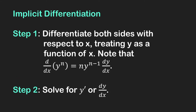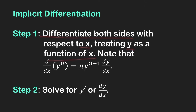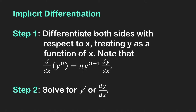Let's recall how to find the derivative of y with respect to x by implicit differentiation. We have a two-step procedure. First step: we differentiate both sides of the equation with respect to x, treating y as a function of x. When you differentiate a power of y, bring down the power, subtract 1 from the power, and multiply by the derivative of y with respect to x. Second step: solve for y prime or dy/dx in the resulting equation from step 1.